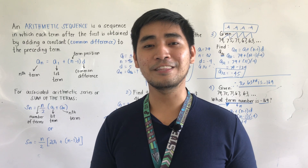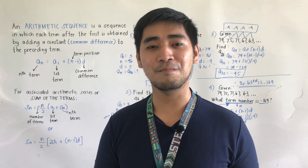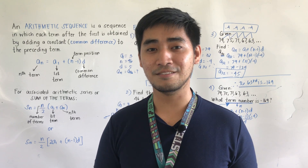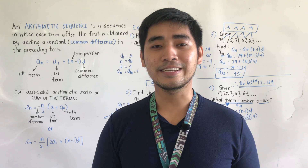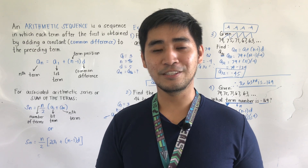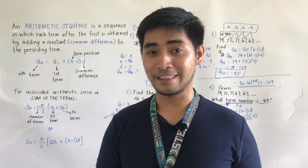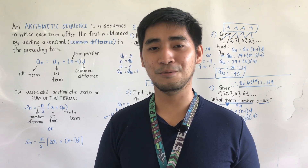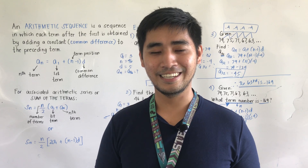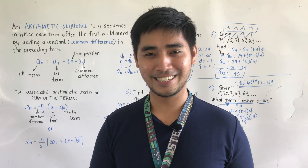That's all for arithmetic sequence. The formula is a_n = a_1 + (n − 1)d, and S_n = (n/2)(a_1 + a_n), where a_1 is the first term, n is the total number of terms, a_n is the nth term, and d is the common difference. I hope you learned something from this video. Once again, I am Engineer Jod Edward Hernandez, saying that mathematics is always fun. Goodbye and God bless!